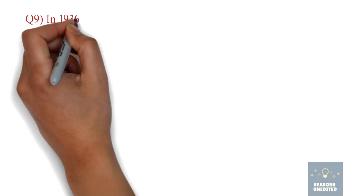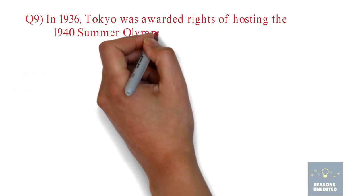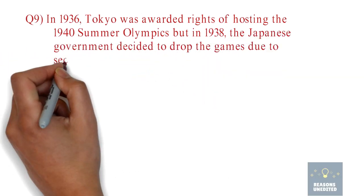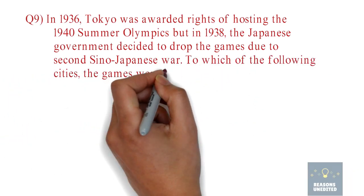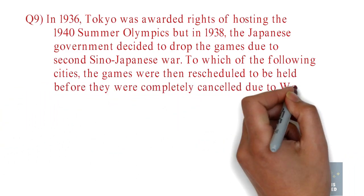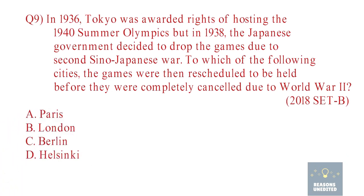Question 9. In 1936, Tokyo was awarded the rights of hosting the 1940 Summer Olympics. But in 1938, the Japanese government decided to drop the games due to the second Sino-Japanese war. To which of the following cities were the games then rescheduled to be held, before they were completely cancelled due to World War II? Option A: Paris. Option B: London. Option C: Berlin. Option D: Helsinki.